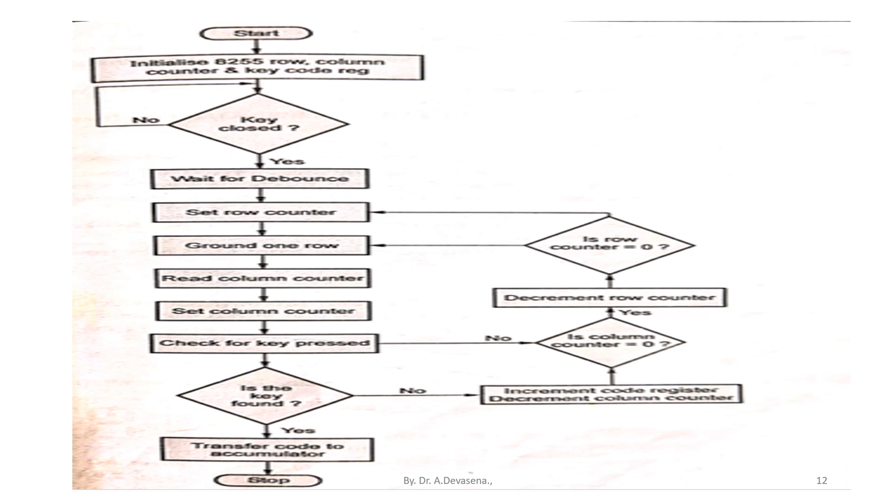Then set row counter, then ground one row, and read column counter. Set column counter, check for key pressed. If the key is found, then transfer code to accumulator. Stop. Now, this is the flowchart representation for keyboard interfacing with 8255.